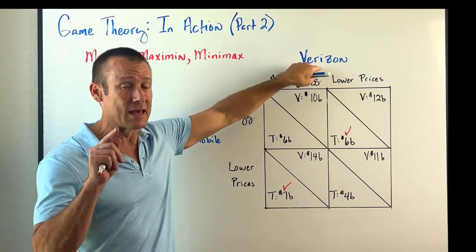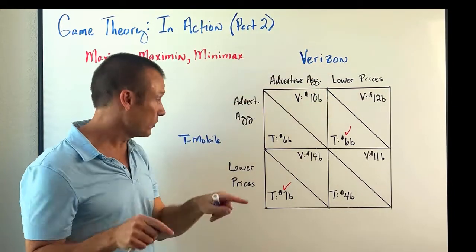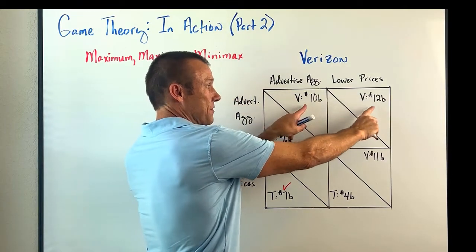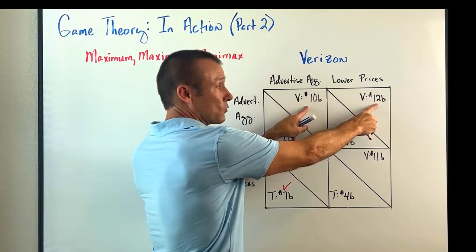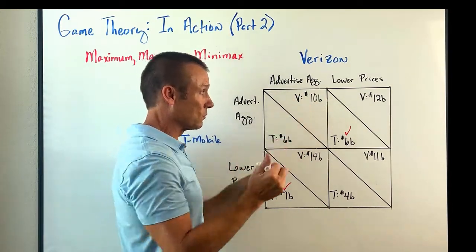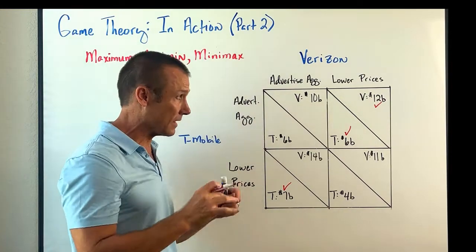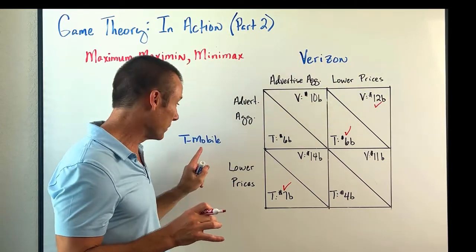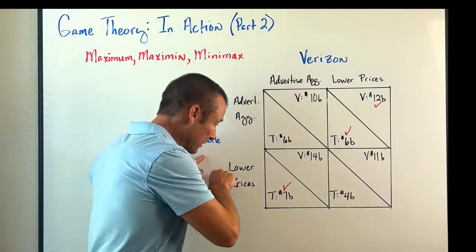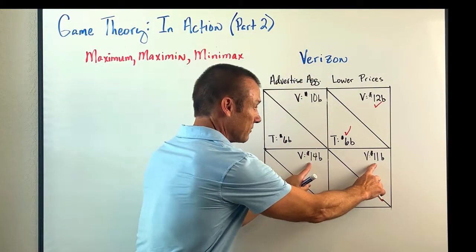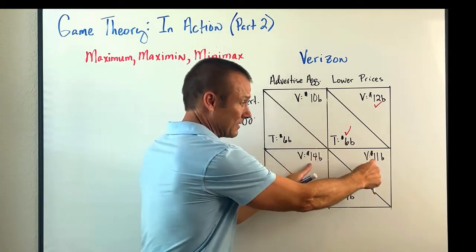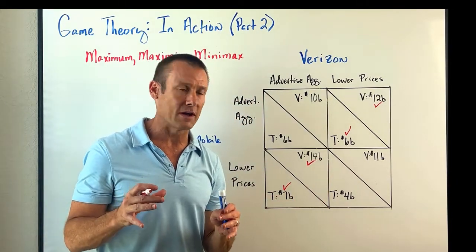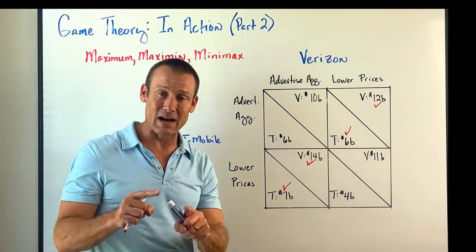Now does Verizon have a dominant strategy? If T-Mobile advertises aggressively, Verizon can lower price for $12 billion or advertise aggressively for $10 billion — lower price is better. But if T-Mobile lowers their price, Verizon gets $14 billion advertising aggressively versus $11 billion lowering price — advertise aggressively is better. Again the checks split, so Verizon also does not have a dominant strategy. Neither player has a dominant strategy.